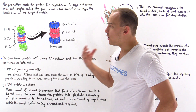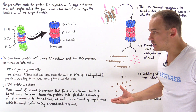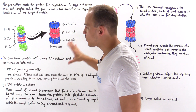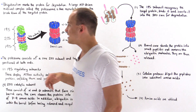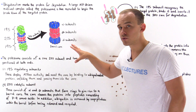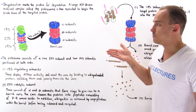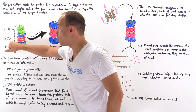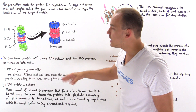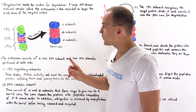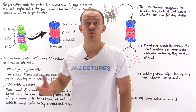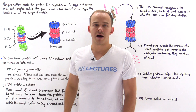Once we ubiquitinate a particular protein, only then can the protein bind to the proteasome complex. The proteasome complex consists of the 19S regulatory subunit, which recognizes the target protein and prevents normal non-ubiquitinated proteins from being broken down within the core. It's the 20S catalytic core that catalyzes the breakdown of that protein into smaller peptides. Remember that the ubiquitin molecules themselves are not degraded — our cells reuse and recycle these ubiquitin molecules.